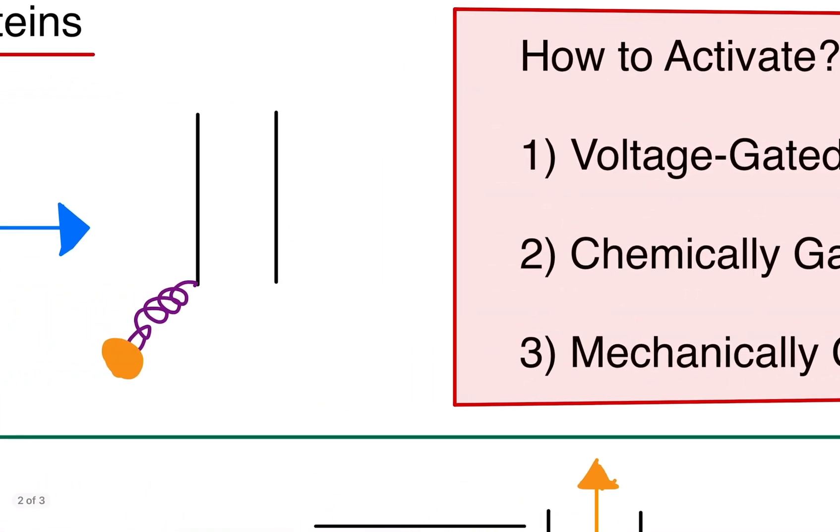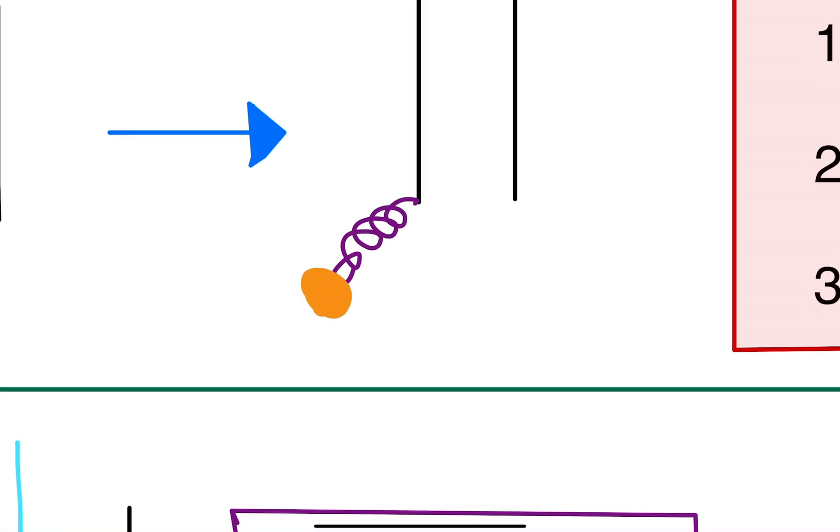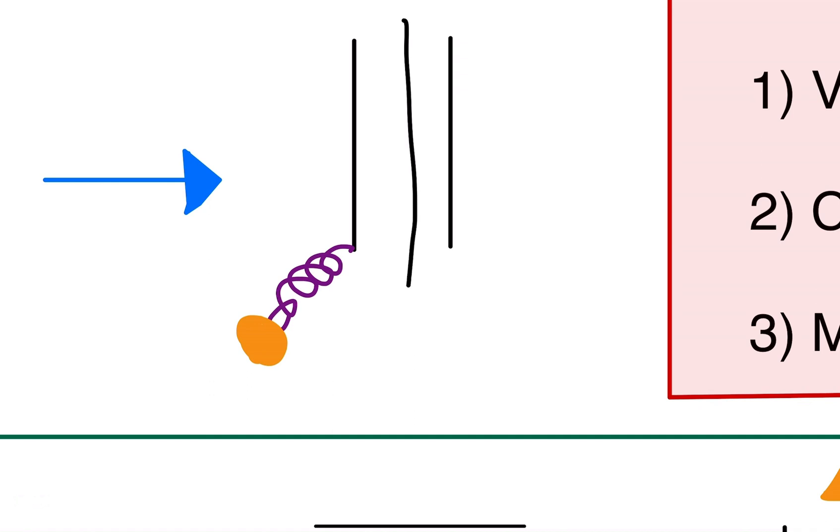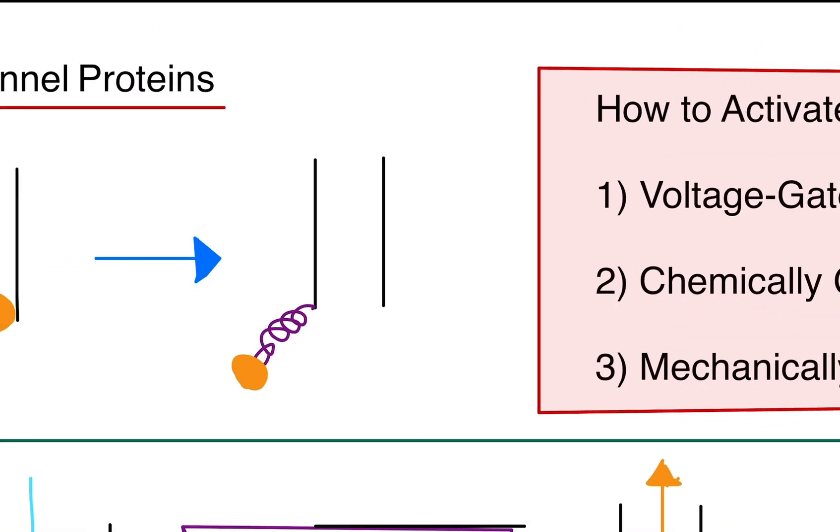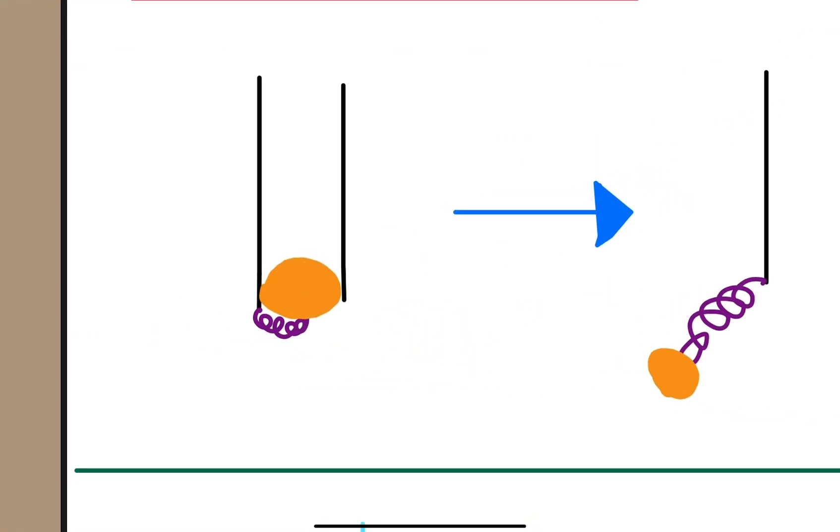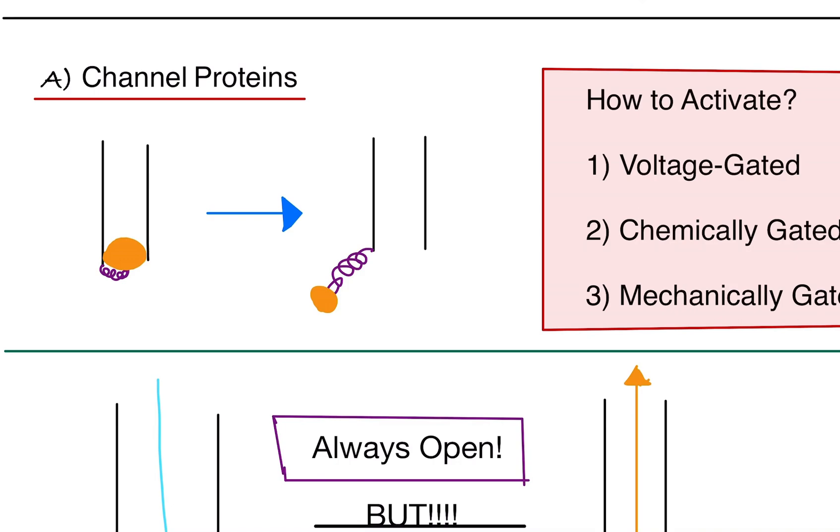There's voltage gated. What this means is when the cell reaches a certain voltage, the ball and the coil will go out of place and basically make the tunnel accessible. So things can go through. Pretend the voltage is at, I don't know, let's say negative 40 millivolts. This is made up. Then the ball and chain will activate and it will move out of the way. If it was at, say, negative 41 millivolts, it's going to look like this. It'll be closed. So that's called voltage gated ion channels or voltage gated channels. Very common.